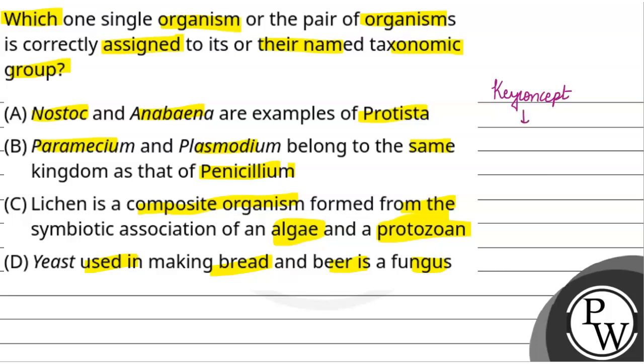So students, the key concept here is different organisms and different kingdoms. We have to see the taxonomic categories or the taxonomical groups based on their features. If we know what features they belong to, then we can answer it easily.